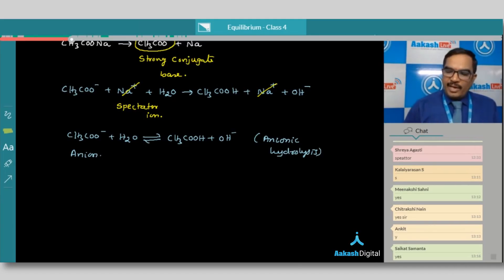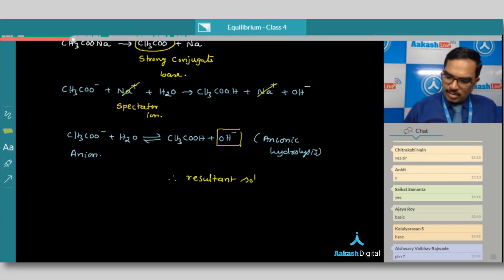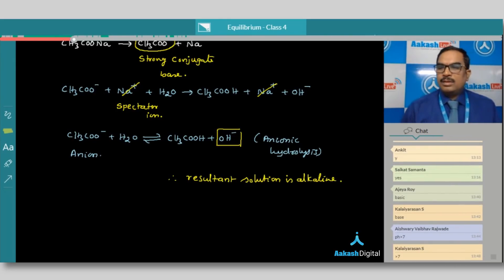So in this anionic hydrolysis, we can see the resultant solution is with excess of the OH- ions. Therefore, resultant solution is alkaline. So pH should be greater than 7.